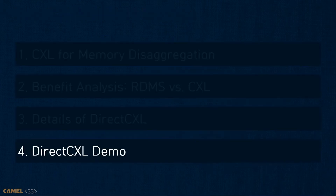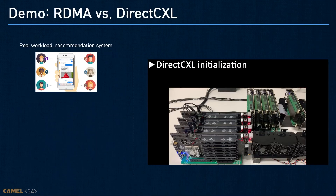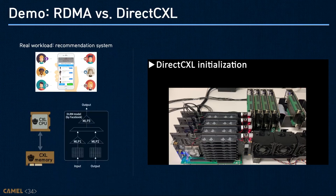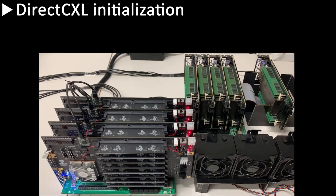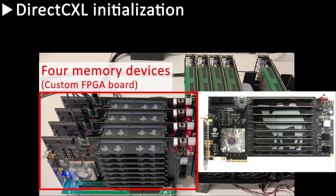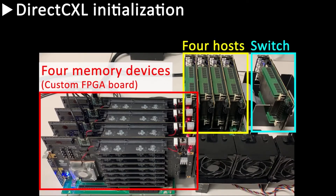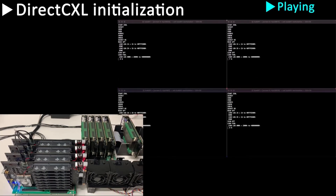Finally, I will show a demo video. In the demo, I will compare the performance of a recommendation system using the existing RDMA-based solution and DirectCXL. We used the DLRM model from Meta, and the whole embedding table is stored in remote memory. On the left side, there are four customized FPGA boards for CXL memory devices. On the upper right side, four accelerator cards are used for CXL hosts and one for the CXL switch.